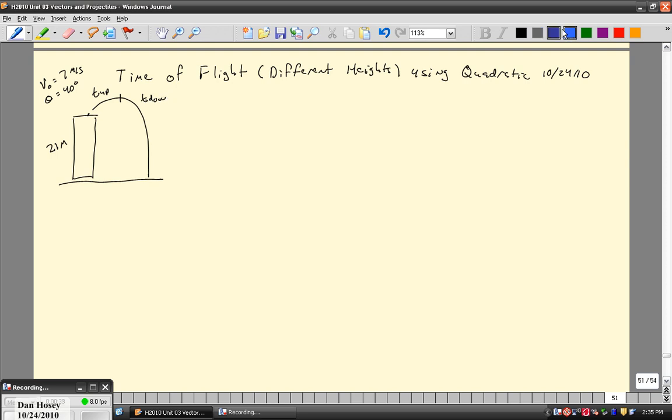Now if you remember, the initial vertical velocity, the velocity in the y component when you launch, is 4.50 meters per second. We got that from 7 meters per second times the sine of 40 degrees.